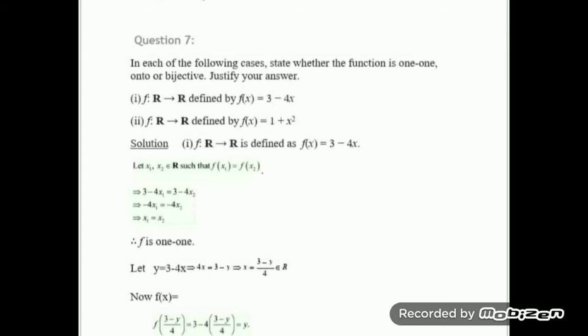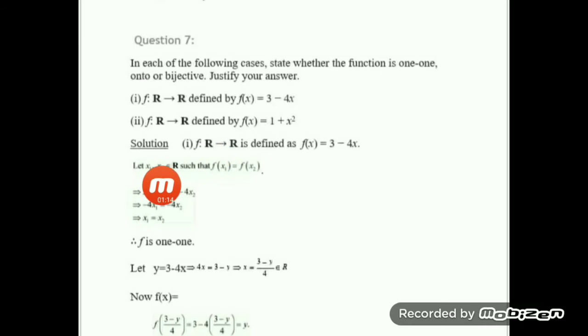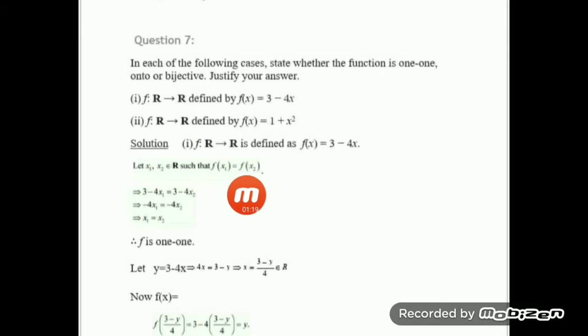I hope you remember the definition of one-to-one and bijective functions. For a one-to-one function, we have to take two elements in the domain and show that if their images are equal, then their pre-images are equal. So we consider two elements x1 and x2 in the domain R such that f(x1) = f(x2).